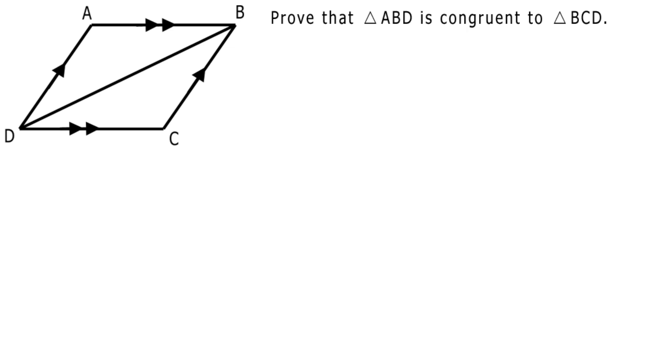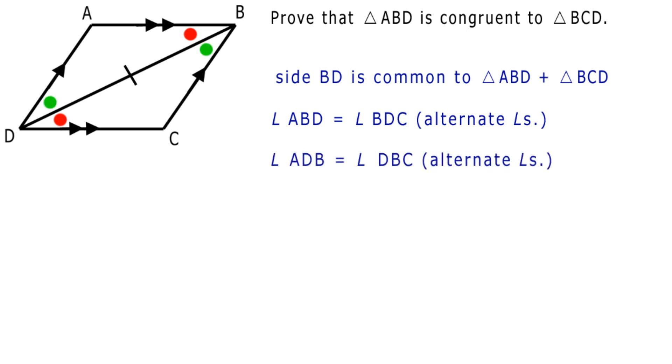Prove that triangle ABD is congruent to triangle BCD. Well, side BD is common to triangle ABD and triangle BCD. Angle ABD equals angle BDC, alternate angles. Angle ADB equals angle DBC, alternate angles again. Hence, triangle ABD is congruent to triangle BCD. The condition angle, side, angle is in common: ASA.